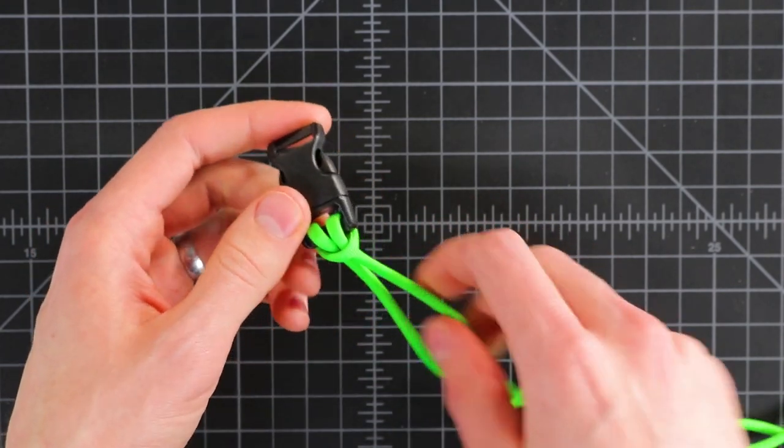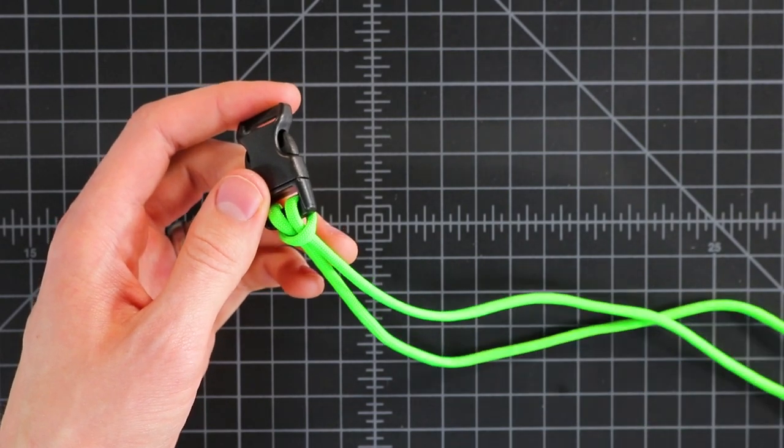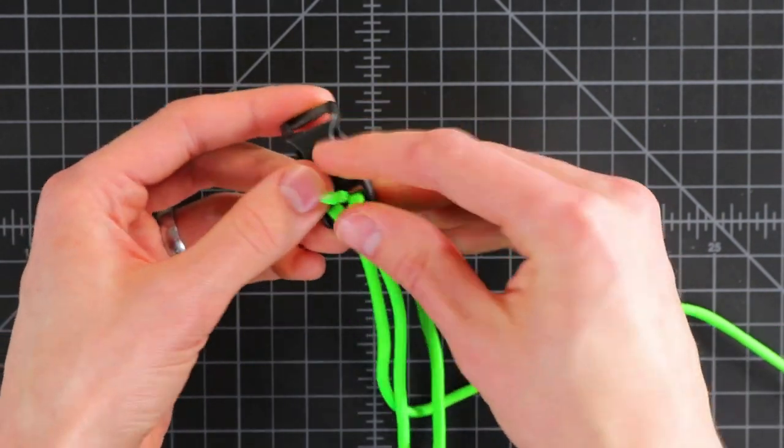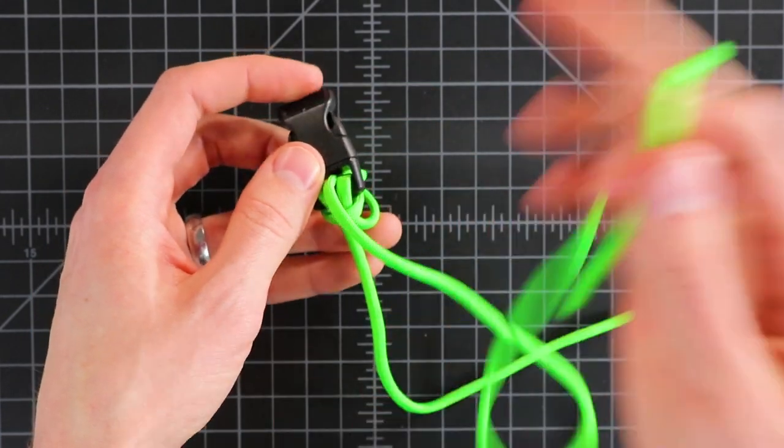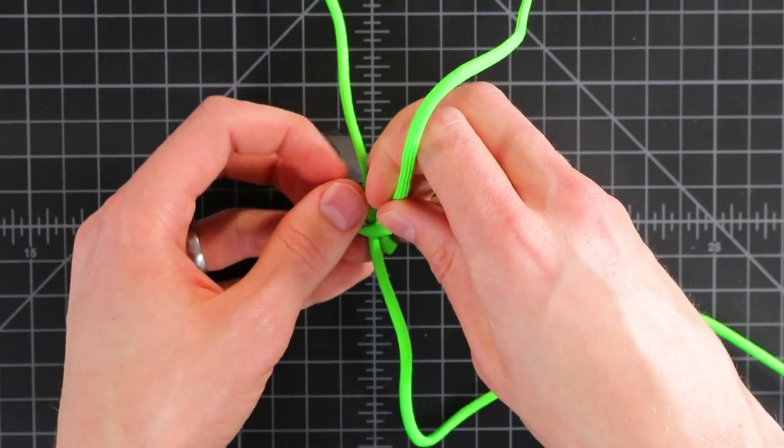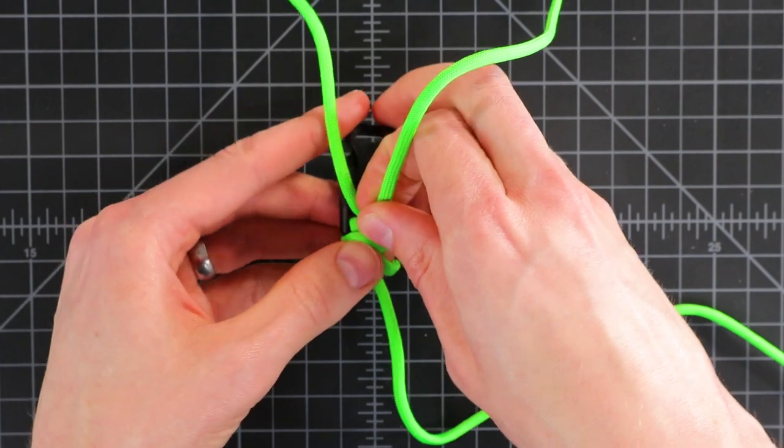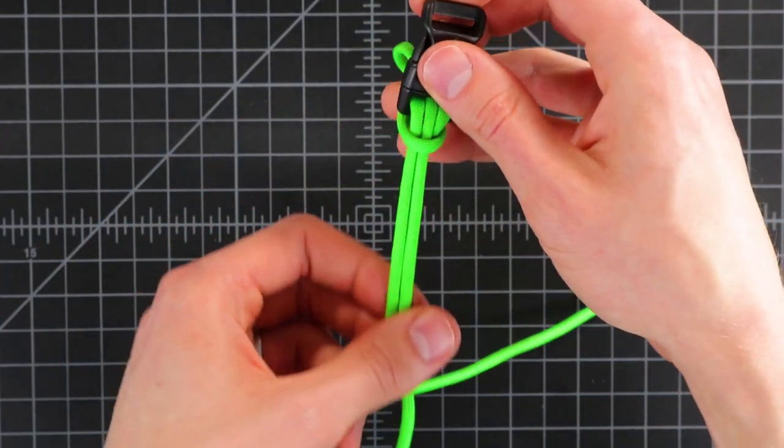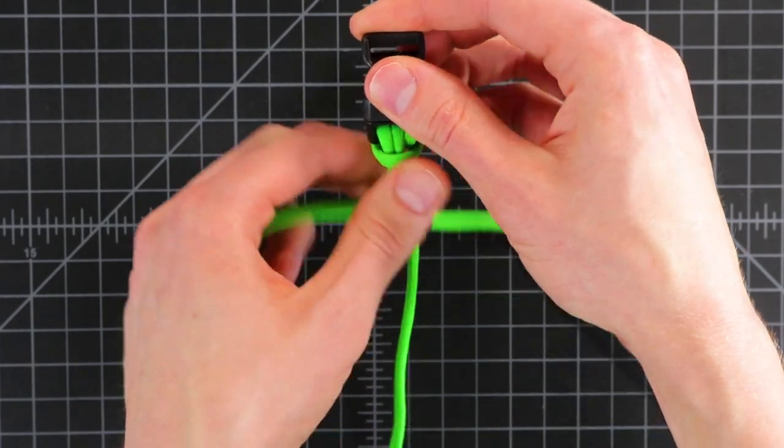So I've got my normal cow's hitch and then I'm just going to add another wrap to the hitch by bringing it once more around and down through the middle. There's a number of ways you could do this. You could just make it in one end if you wanted to, but I might meet in the middle.